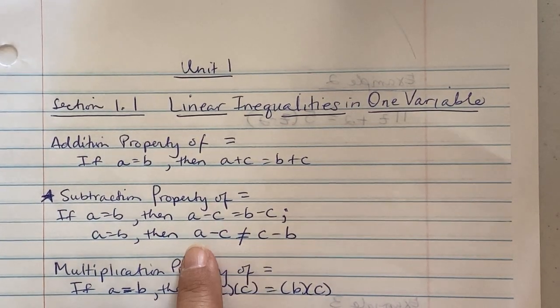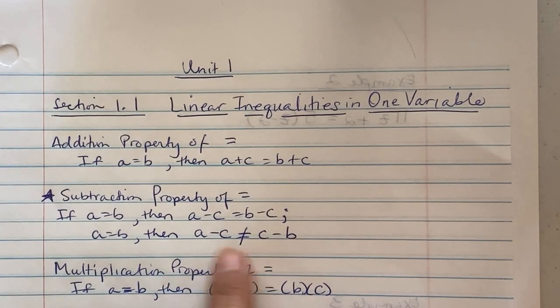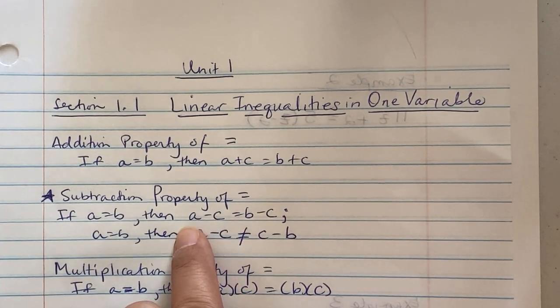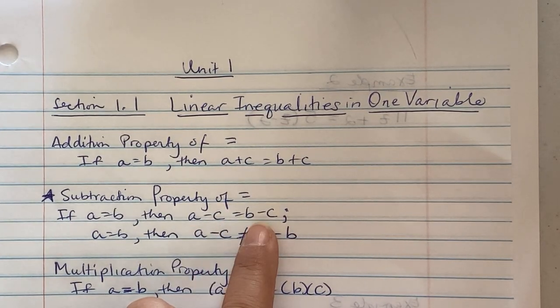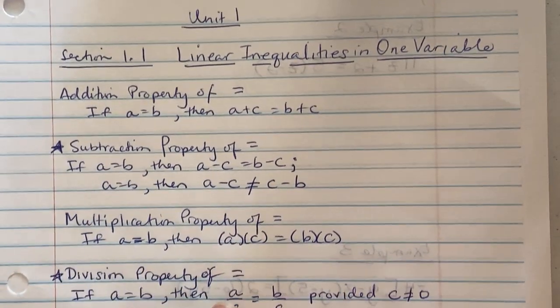You can test this rule by coming up with values for a and c and b and seeing that the left and right don't equal in the second set. Multiplication property of equality says that if a is equivalent to b, then a times c is the same as b times c.